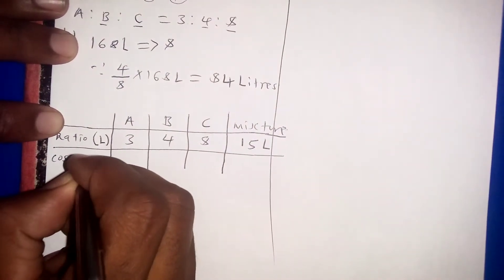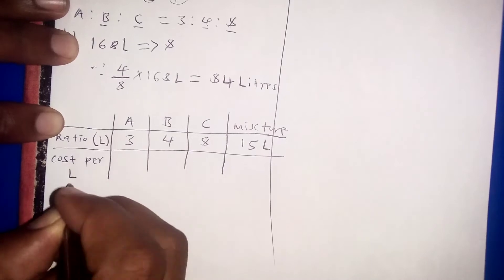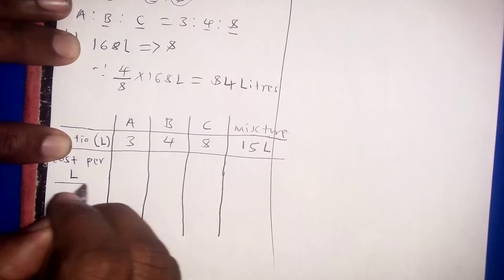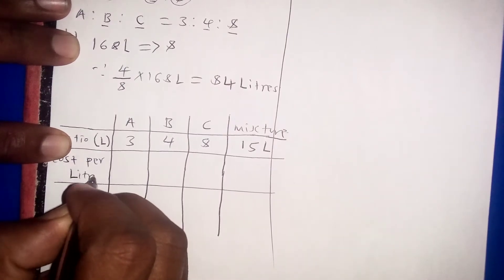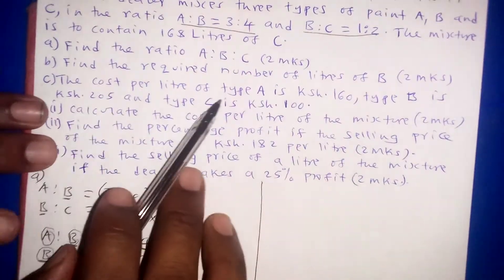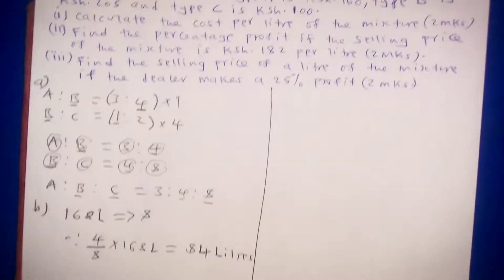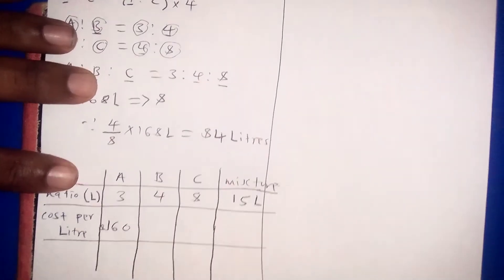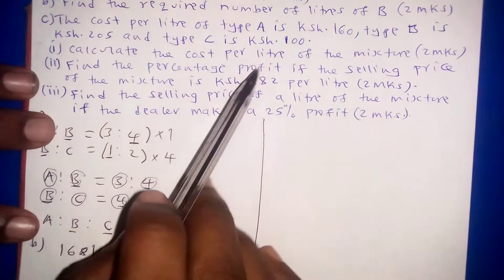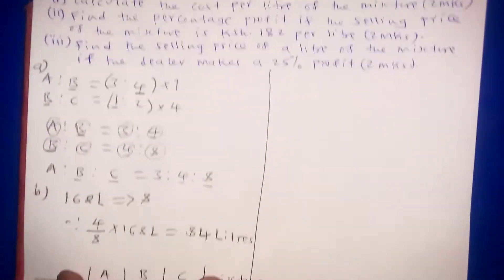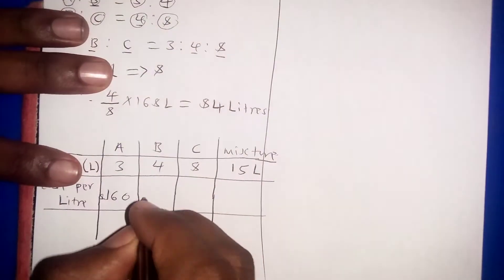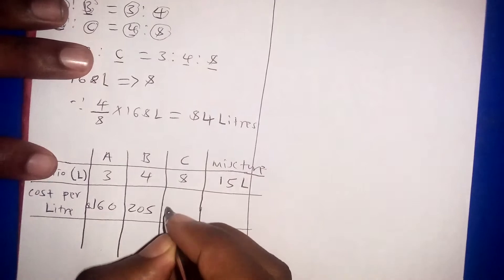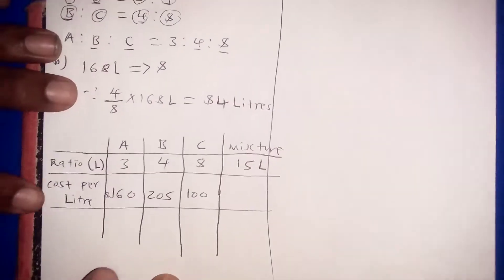Now we look at the cost per liter for each type. Type A costs 160 shillings per liter, type B costs 205 shillings per liter, and type C costs 100 shillings per liter.